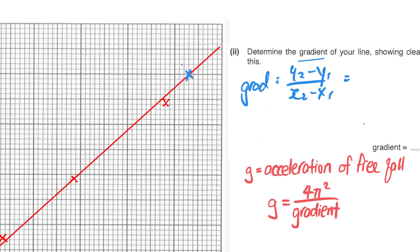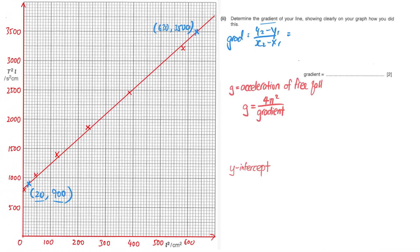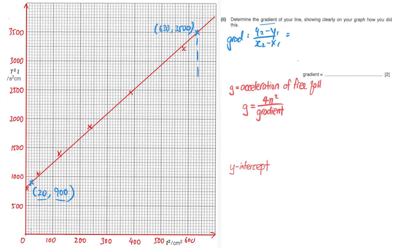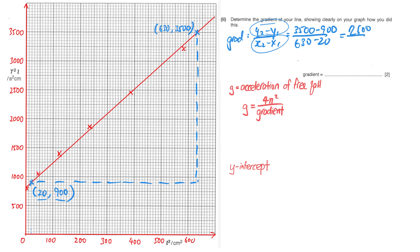The next point is over here, which is also a nice point to read, and they are far apart. The coordinates are 630 comma 3500. There's one last thing you need to do on your graph for presentation — draw the dotted triangle. These presentations are important so the marker can check your coordinates for the gradient. Once they verify that is correct, they'll go to your working, where you substitute: y2 is 3500 minus 900 over 630 minus 20. Always remember it's rise over run — vertical axis over horizontal axis.